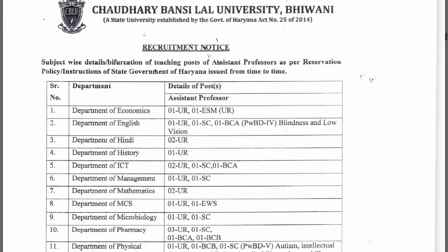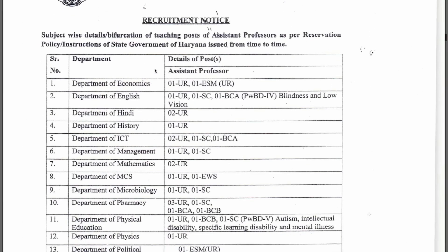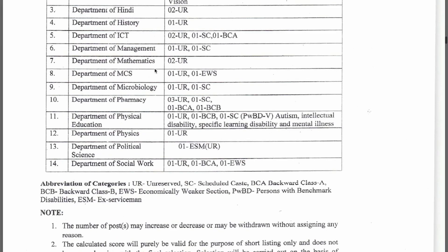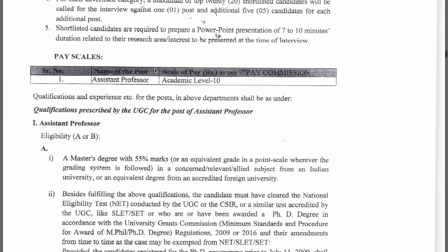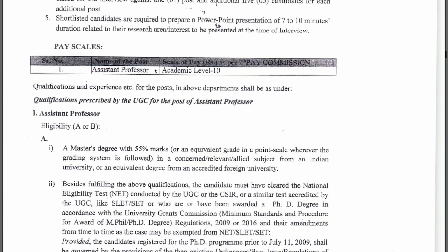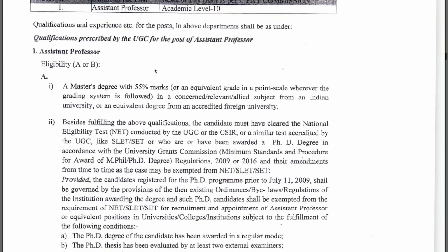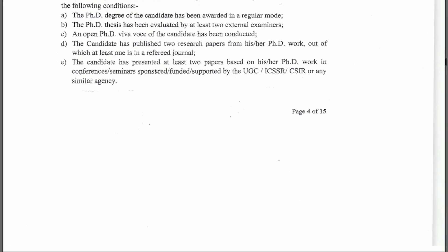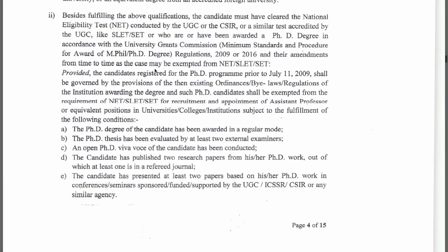The assistant professor recruitment covers different subjects — you will find 14 different departments. The qualification criteria follows UGC norms, meaning a Master's degree plus clearance of a competitive exam such as NET, SLET, or SET is required.